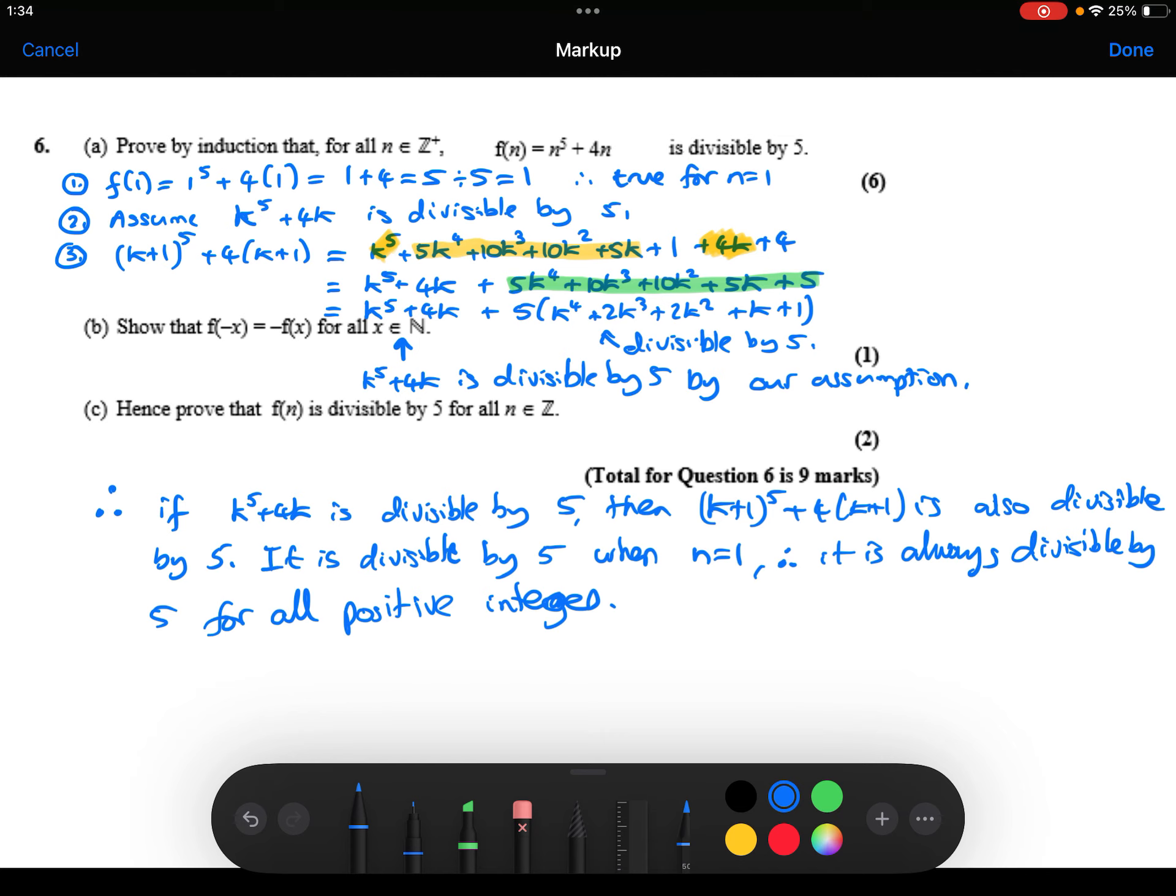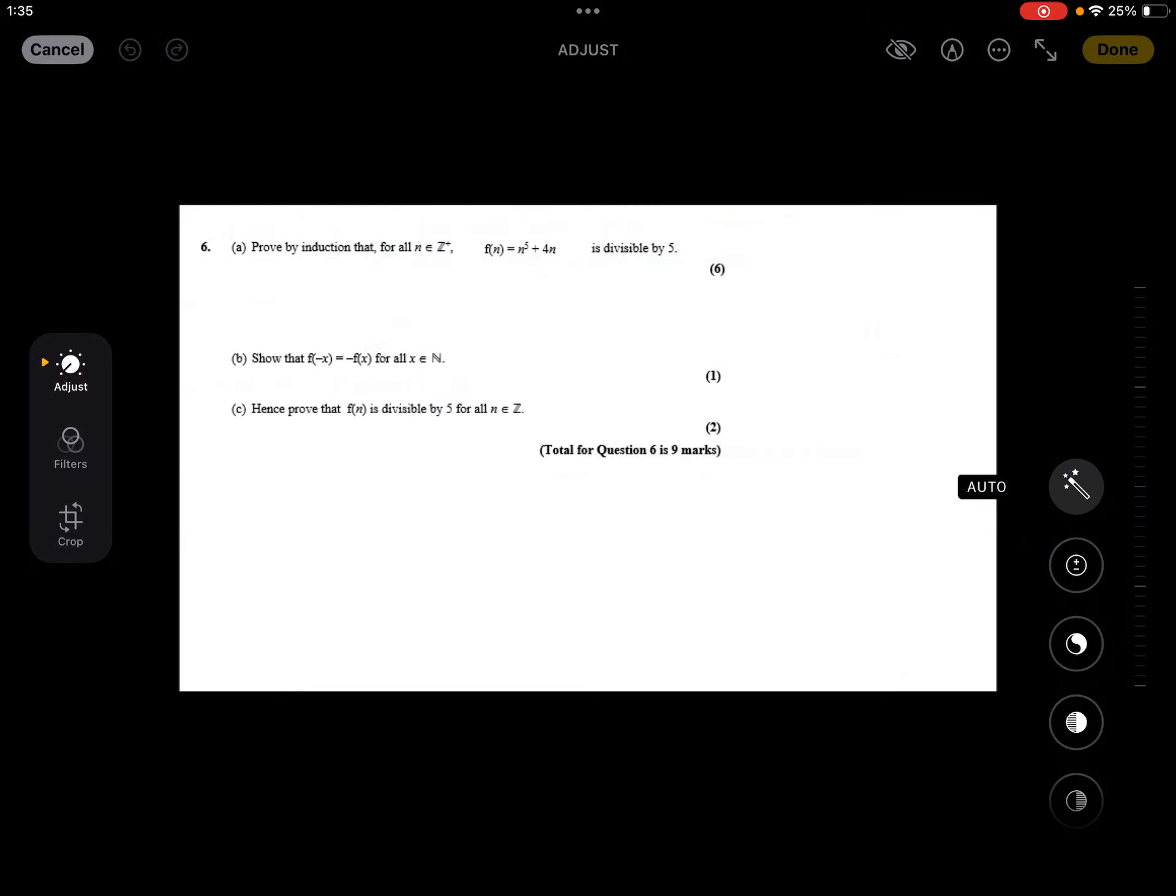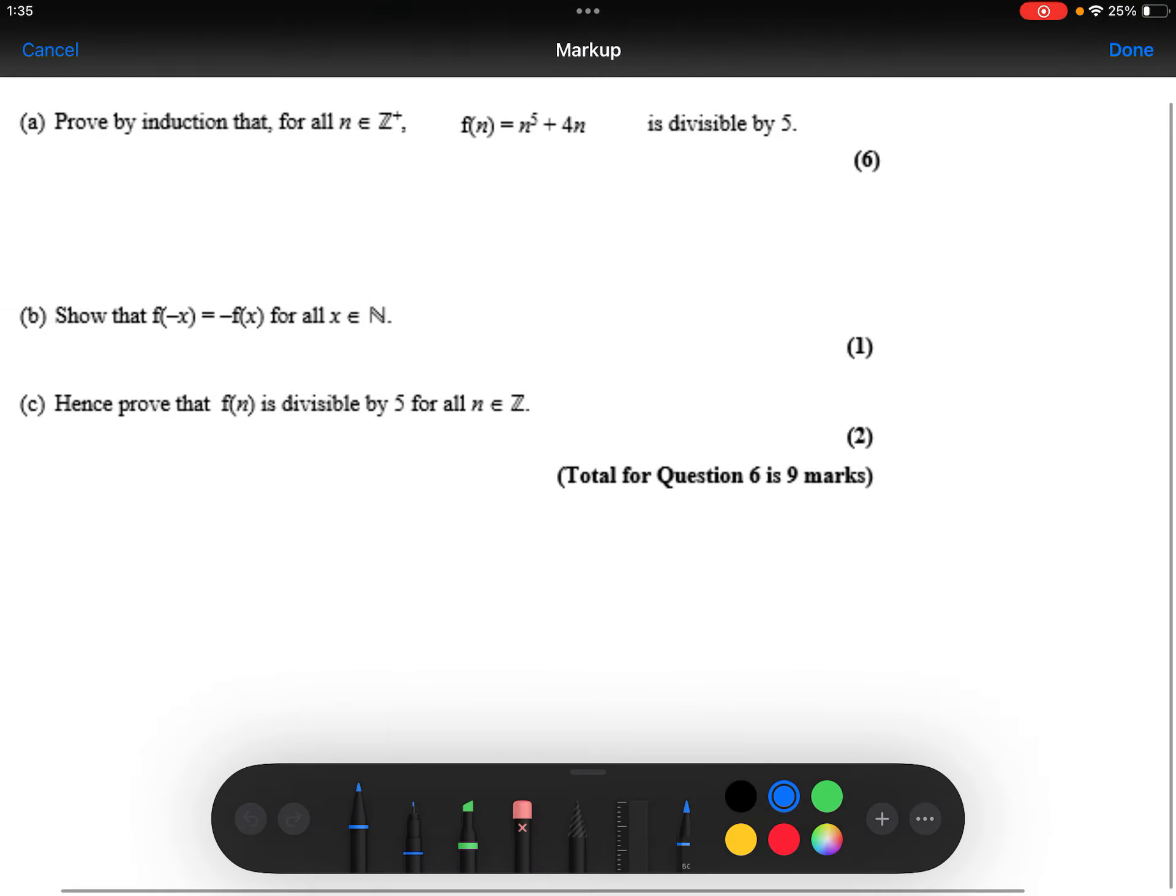Make sure you've got all of that copied down, if you haven't yet, because I'm going to clear my screen to give me some space for part B and C. So, part B says to show that f of minus x is equal to minus f of x for all x being natural numbers.